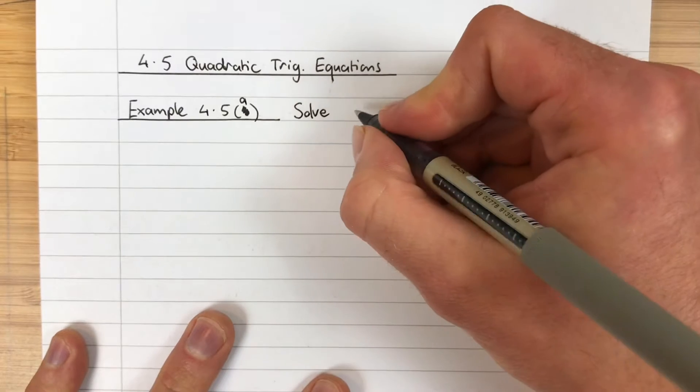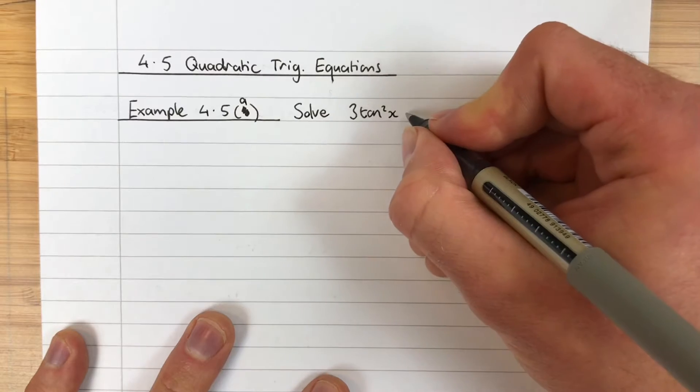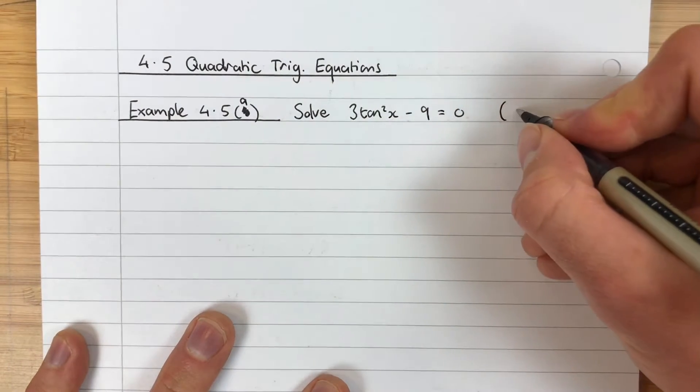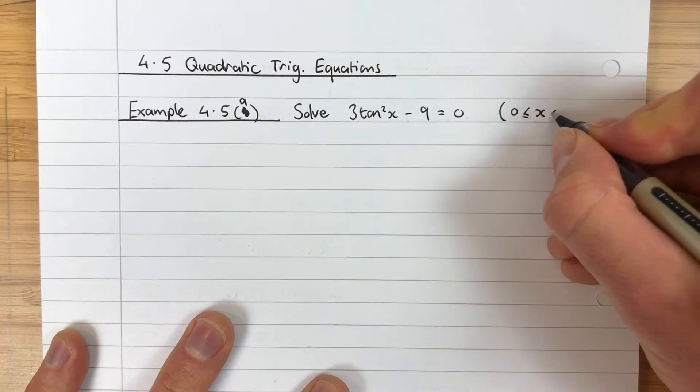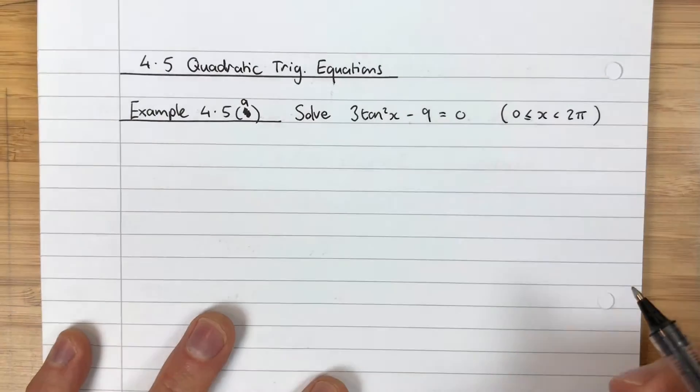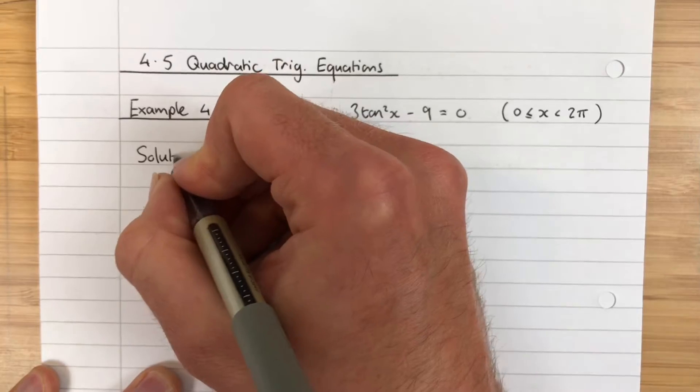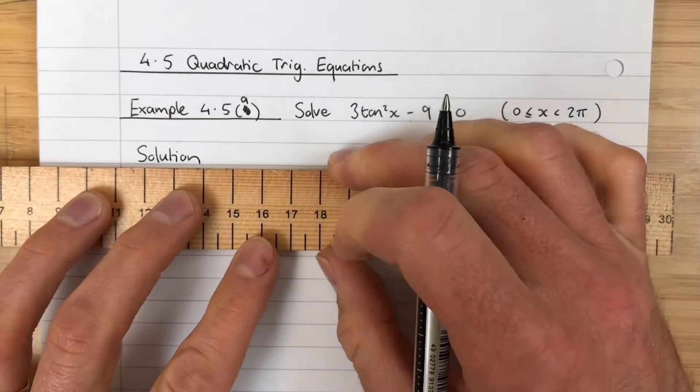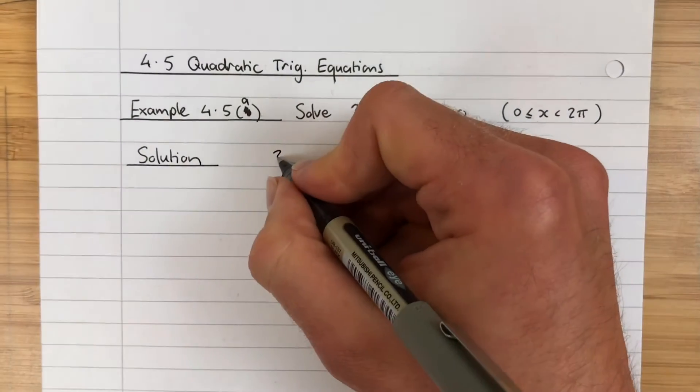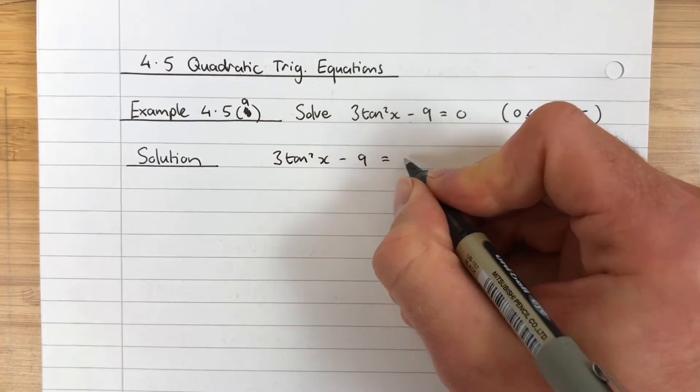Solve 3tan²x - 9 = 0 for 0 ≤ x < 2π, which tells us my final answers have to be in radians. Solution: we'll write the example out first, 3tan²x - 9 = 0.